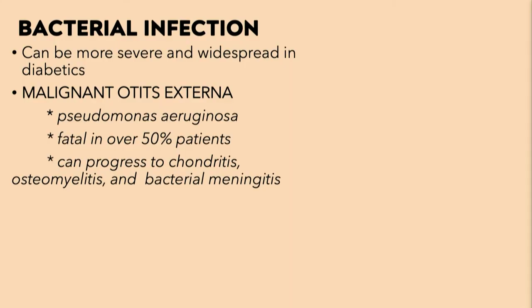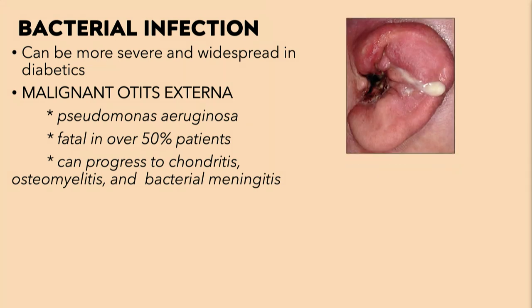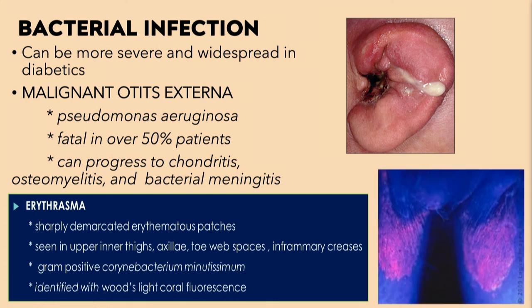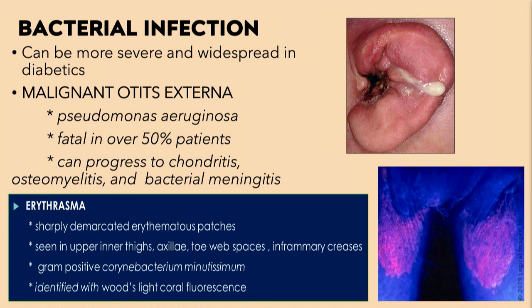Other infections associated with diabetes include malignant otitis externa caused by pseudomonas, which can be really severe, with chondritis visible clinically and underlying osteomyelitis possible. Erythrasma, caused by Corynebacterium minutissimum, can also be a presenting sign of diabetes. It occurs most commonly in intertriginous regions like the groin, and shows a characteristic coral-red fluorescence under Wood's lamp.